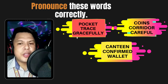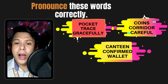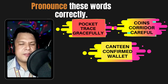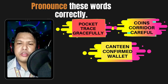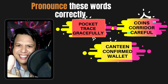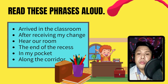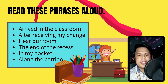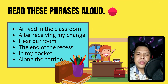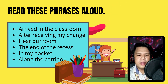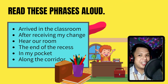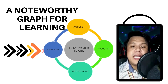It's time for us to pronounce these words correctly. The first one is: pocket, pockets, trays, gracefully, coins, corridor, careful, canteen, confirmed, wallet. Then we move on to the phrases: arrived in the classroom, after receiving my change, near our room, the end of the recess, in my pocket, along the corridor.